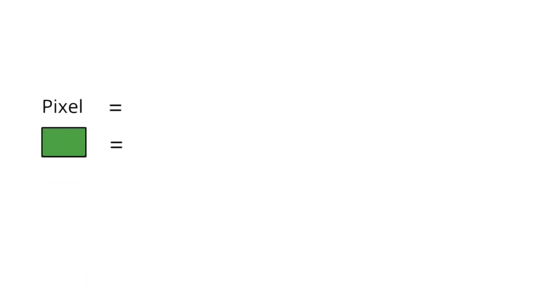The areas I'm pointing to here, here, and here highlight individual pixels. Each pixel contains two types of information: luminance and chrominance.